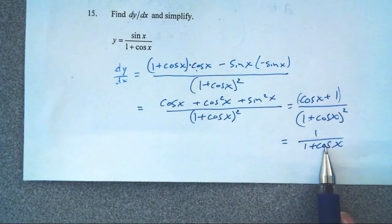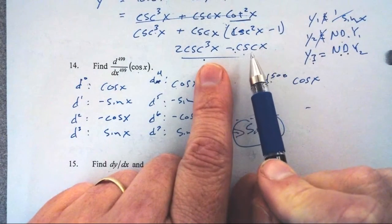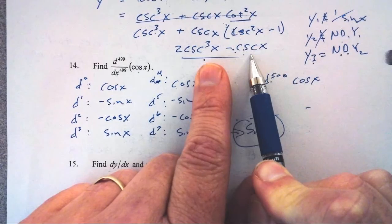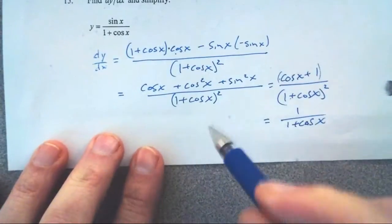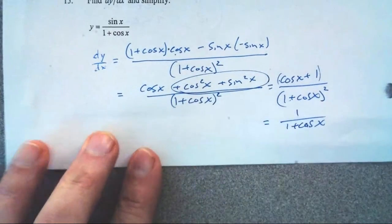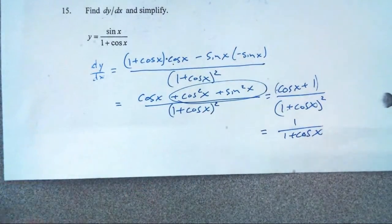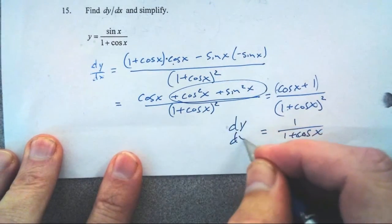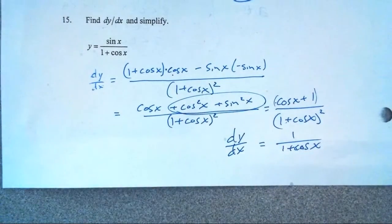Sine squared plus cosine squared equals one — that should be screaming at us. So this is cosine of x plus one, over 1 plus cosine of x, all squared. I can cancel a factor: I've got one factor of 1 plus cosine and two factors of 1 plus cosine, and I end up with 1 over 1 plus cosine of x. So dy/dx equals 1 over 1 plus cosine of x.